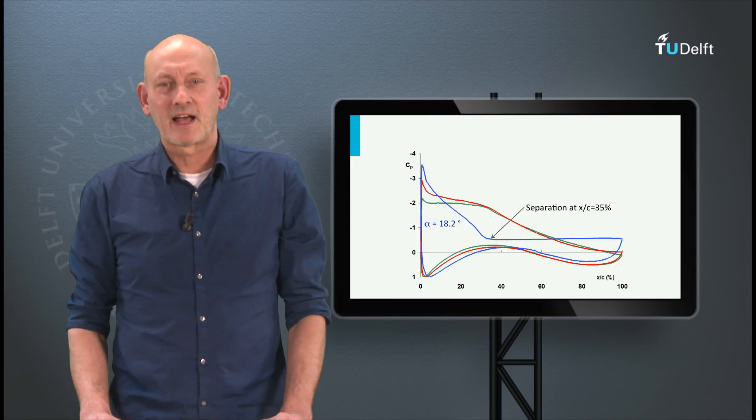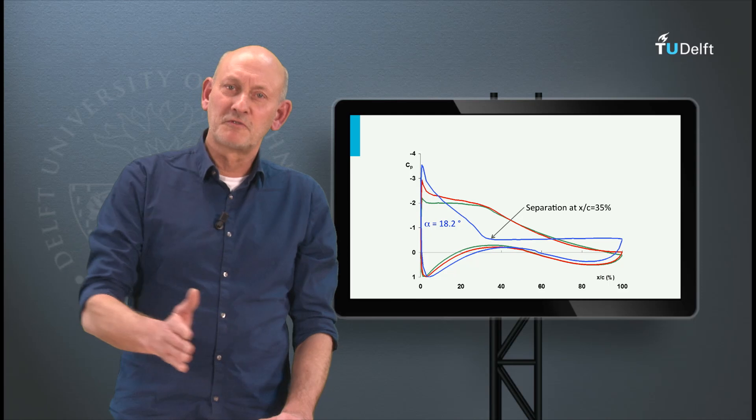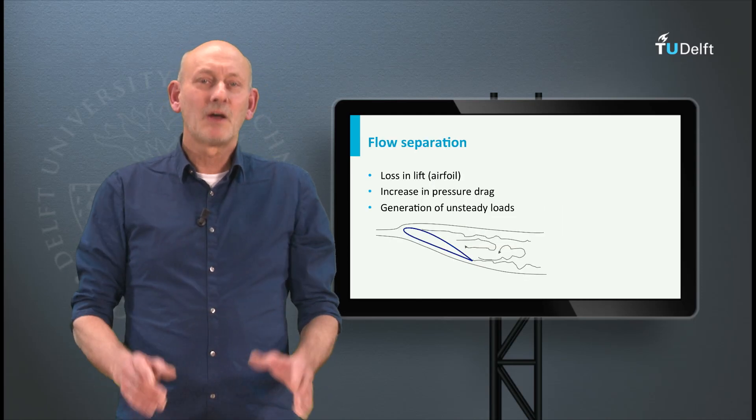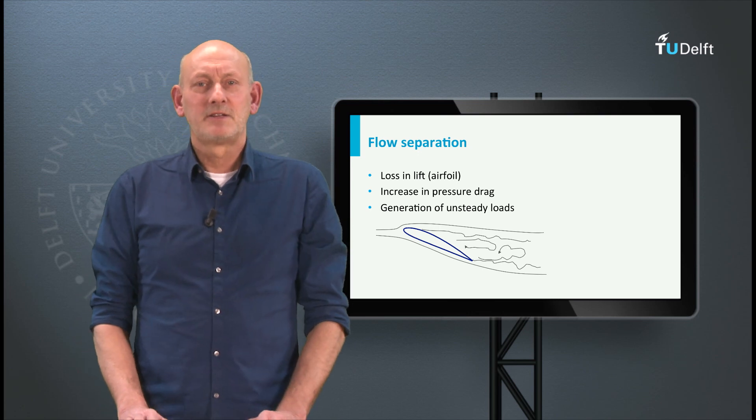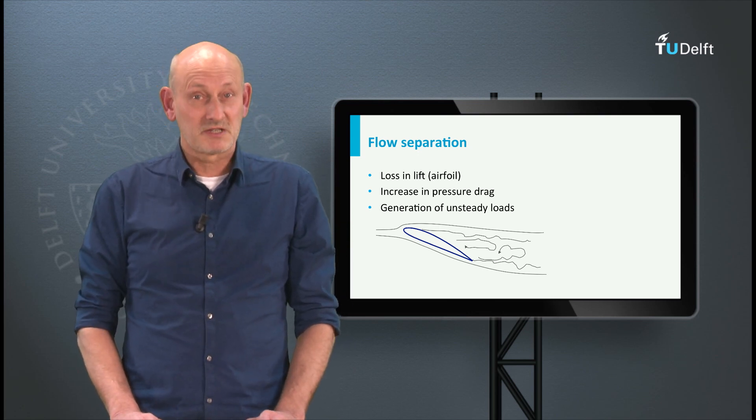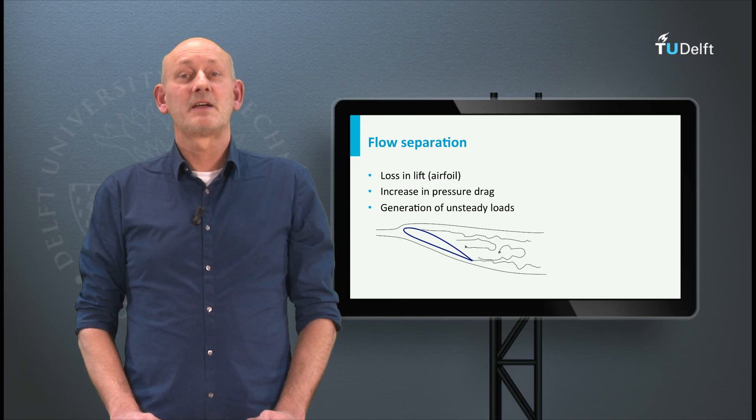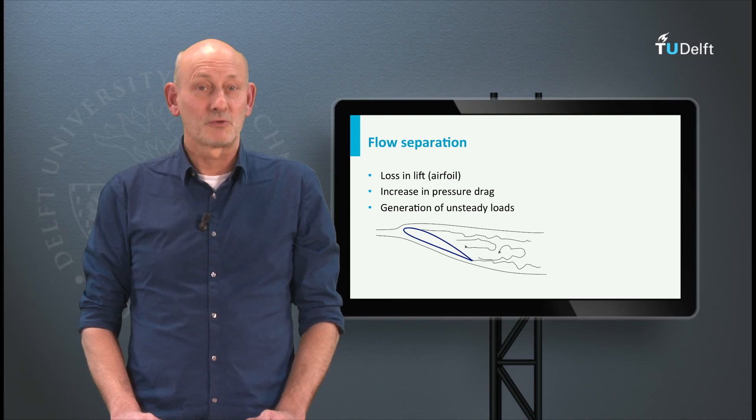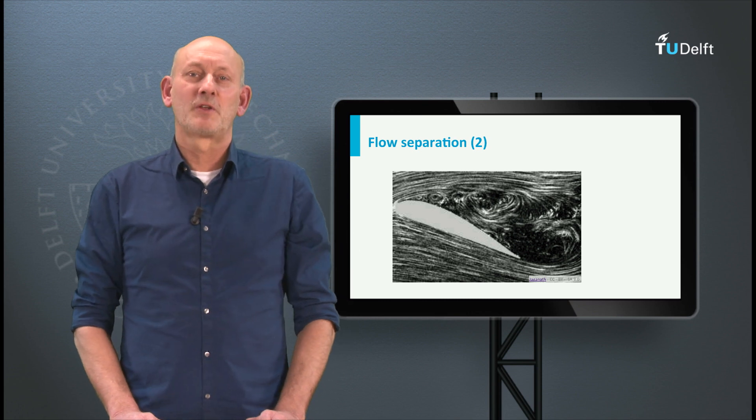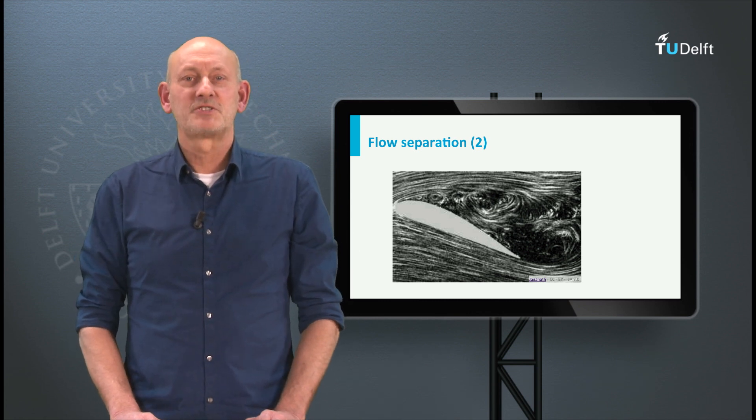If we further increase the angle of attack separation moves forward in the direction of the leading edge. Why is separation bad? It decreases lift, it increases drag and more specific the pressure drag, and it generates unsteady forces or loads. This still from the flow around the stalling airfoil clearly shows the generation of vortices that roll off the airfoil.